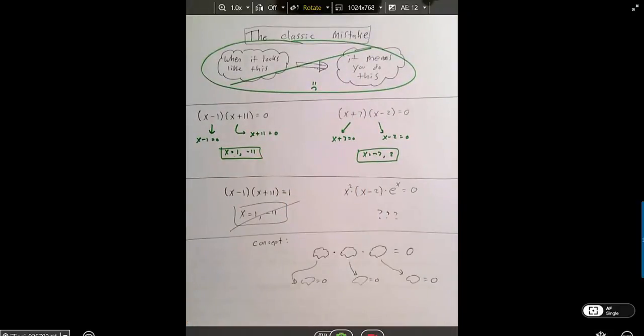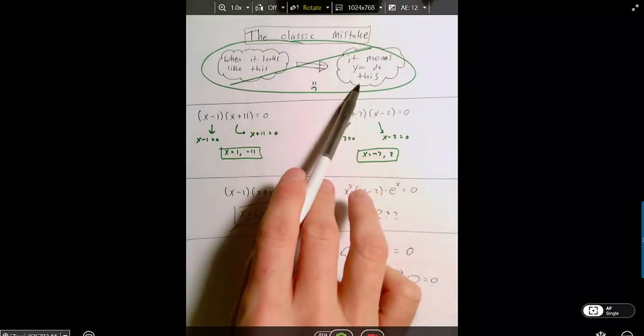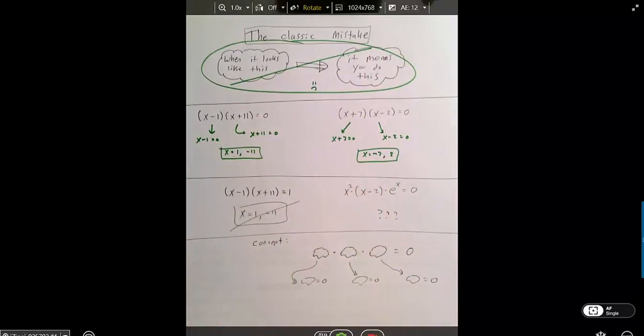The problem with the classic mistake is you're focusing on the wrong thing. You don't want to say, when a problem looks like this, you do this. Instead, you want to be trying to spot what's the underlying concept. So for these problems, of course, it's the zero product property, and the concept is,